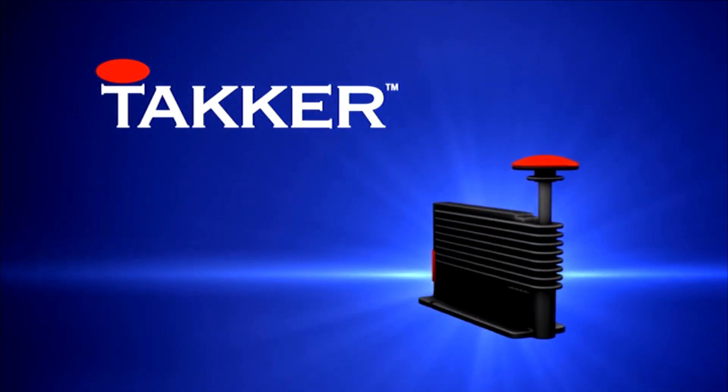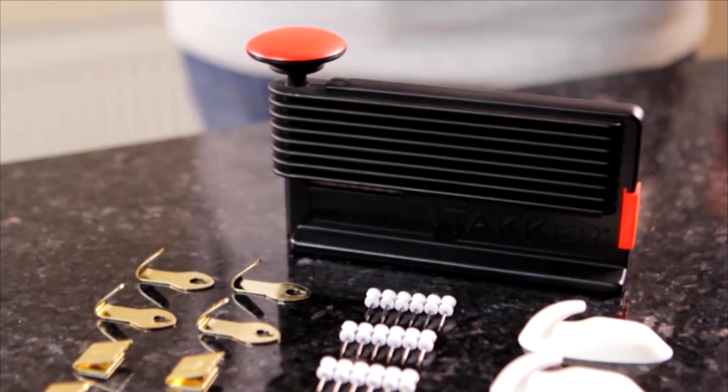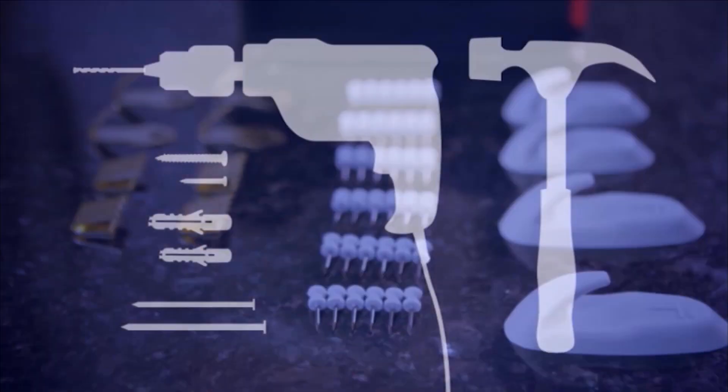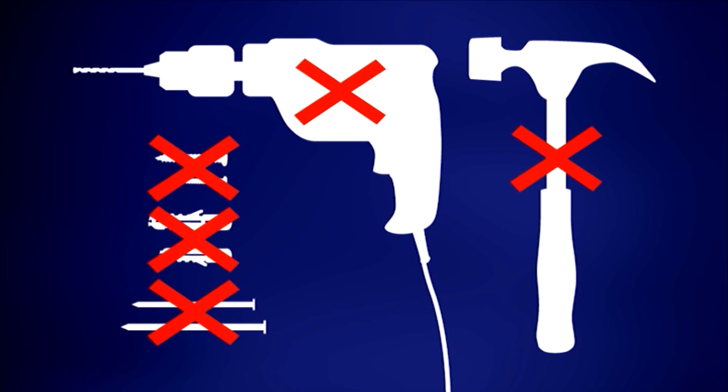We are going to show you how to use the Tacker and some of its many uses around the home and workplace. The Tacker has been specially designed for use in plasterboard, plastered and wooden surfaces, eliminating the need to use electric drills, screws, plugs, hammers and nails.